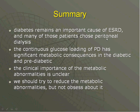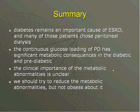In summary: diabetes remains a very important cause of kidney failure, and many of those patients hopefully will choose peritoneal dialysis. Glucose loading aggravates hyperglycemia, causes hyperinsulinemia, and contributes to hyperlipidemia. However, the clinical importance of these metabolic abnormalities remains unclear — all bets are off with dialysis patients regarding the lipid story. We should try to reduce these metabolic abnormalities, but not be too obsessive about it. Thank you very much.